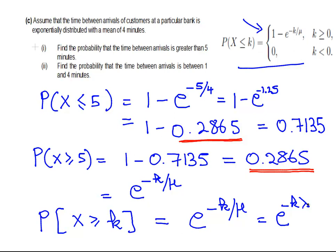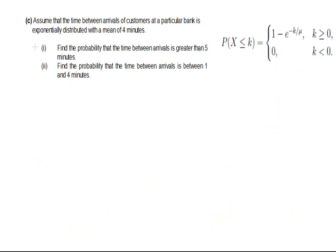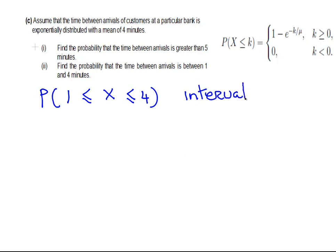Find the probability that the time between arrivals is between 1 minute and 4 minutes. Let's break this up into two parts. We're being asked for the probability of X being between 1 and 4. This is an interval probability, and I'm going to use the 'too high, too low' approach.